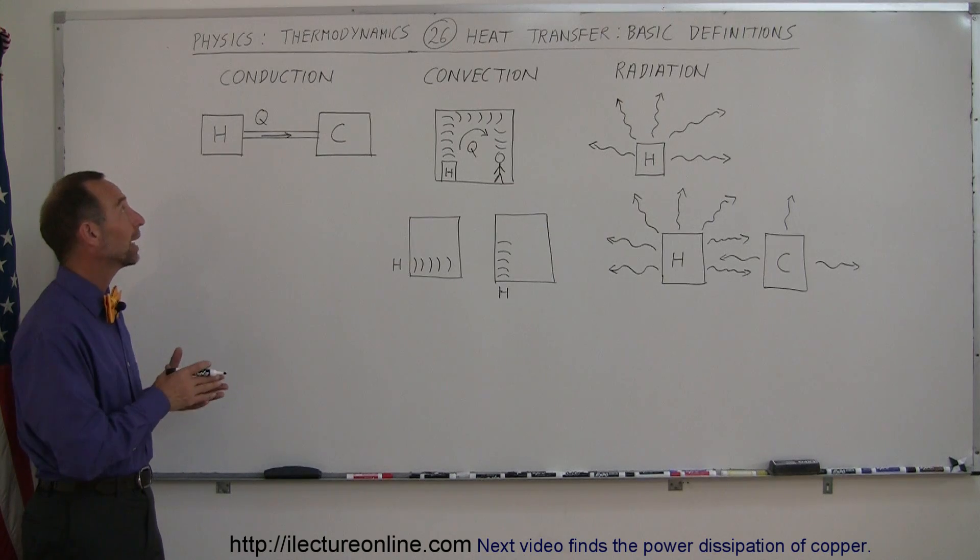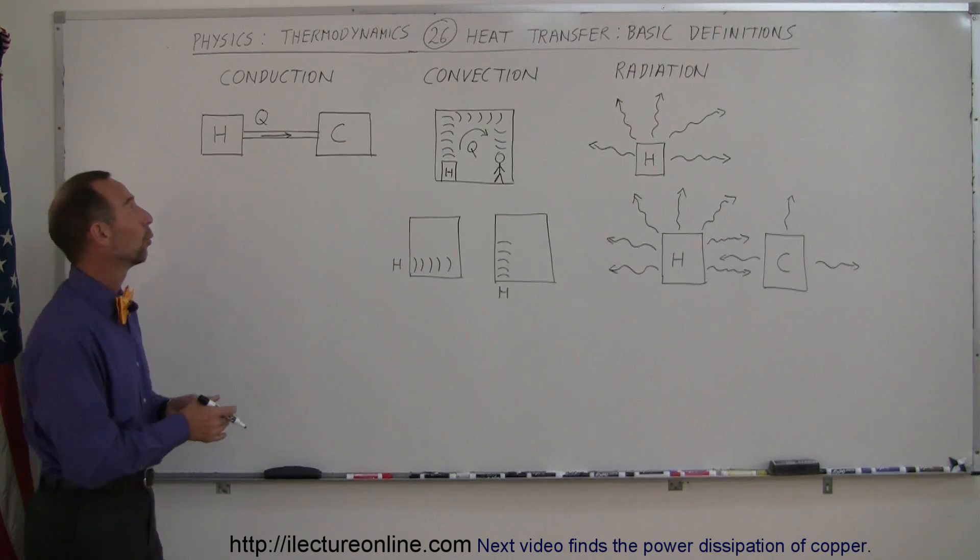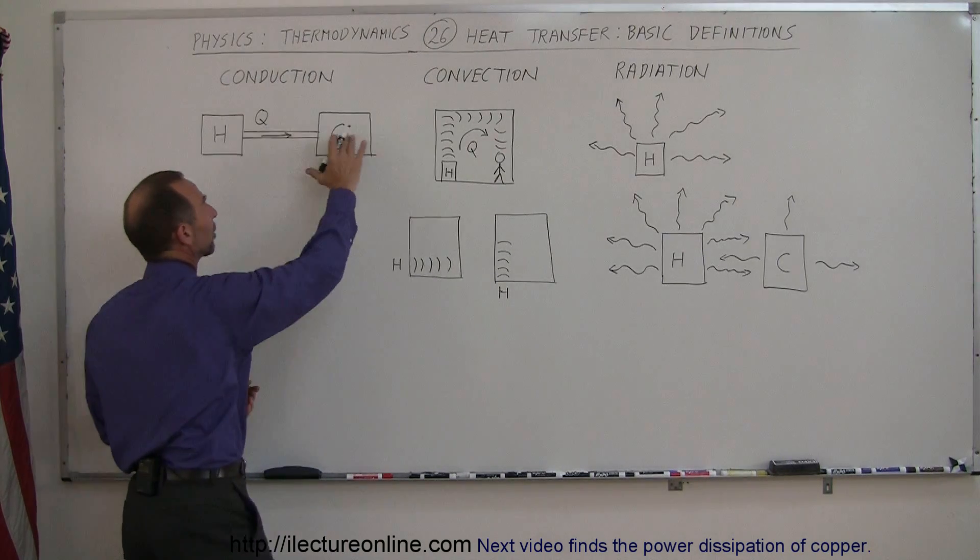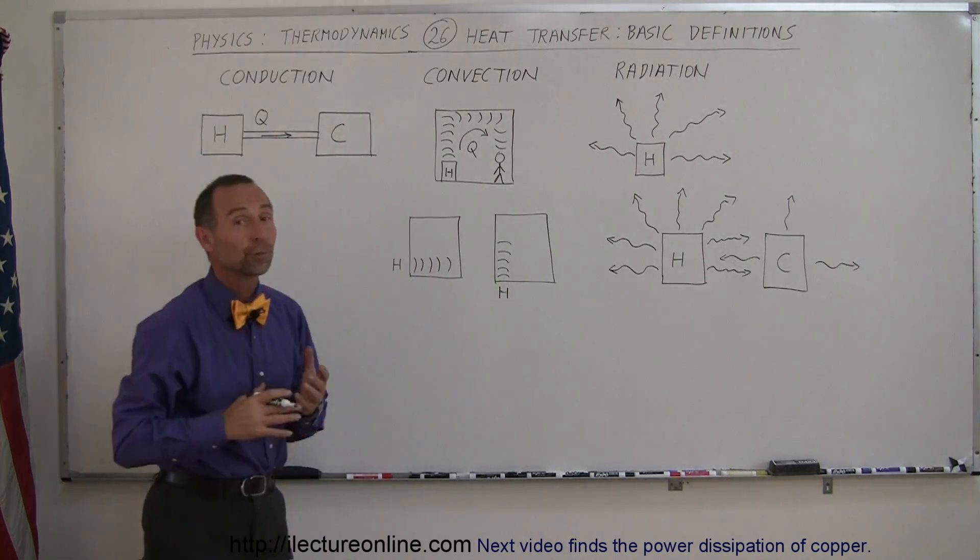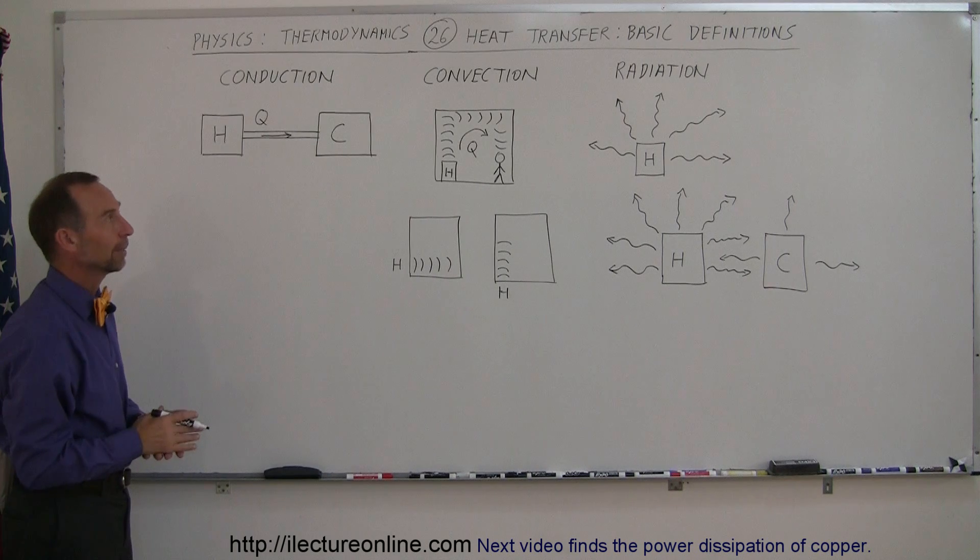Now in nature there are three main ways in which heat can be transferred. One is called conduction, the other one is called convection, and the third one is called radiation. All three occur in nature at all times.